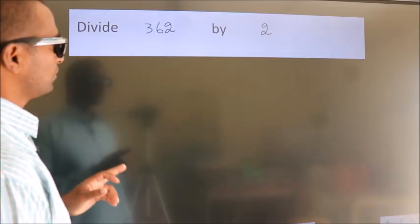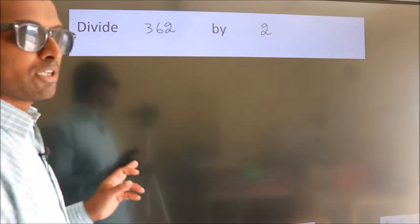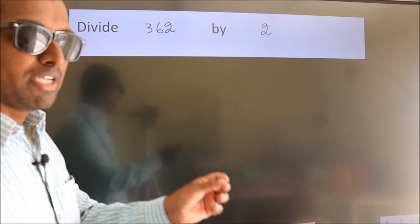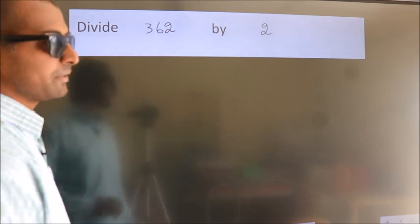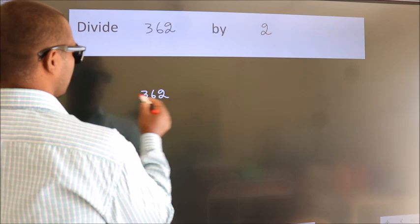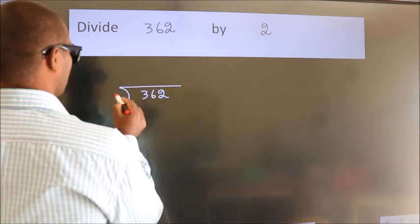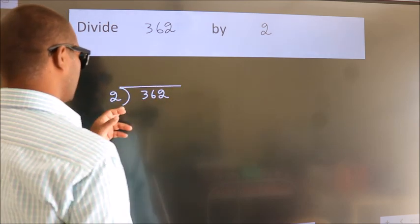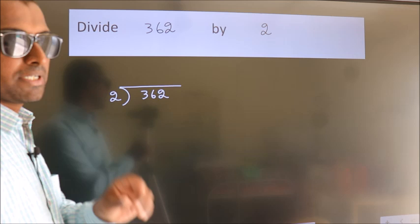Divide 362 by 2. To do this division, we should frame it in this way. 362 here, 2 here. This is your step 1.